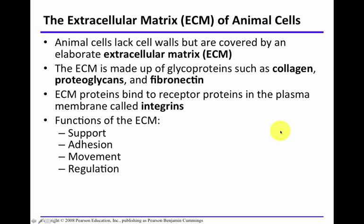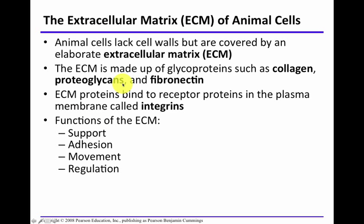In animal cells, outside of the plasma membrane, there's an extracellular matrix. It's made of glycoproteins such as collagen, proteoglycans, and fibronectin. You'll also hear about integrins in relation to the extracellular matrix, because extracellular matrix proteins bind to integrins — proteins on the plasma membrane. The functions of the extracellular matrix include support, adhesion, movement, and regulation.